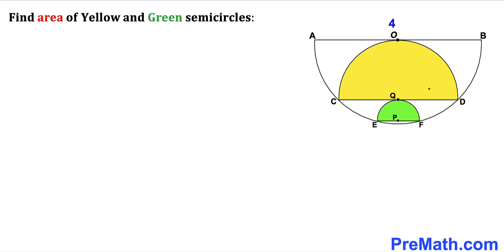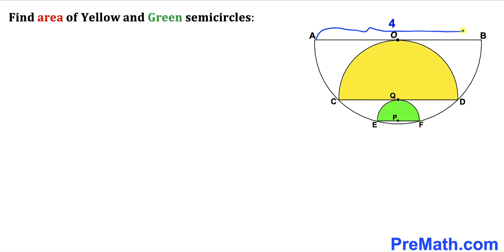Welcome to pre-math. In this video we have got yellow and green semicircles inscribed in a big semicircle, such that O, Q, and P are the centers of these semicircles. Moreover, the diameter AB of this big semicircle is 4 units, and furthermore these diameters CD and EF are chords to this big semicircle. Now we are going to calculate the area of this yellow semicircle and this green semicircle as well.